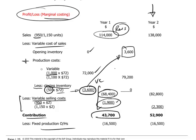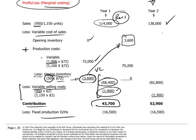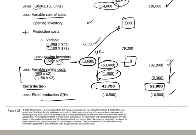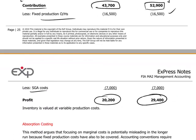In year two, we sold 1,150 units, giving us revenue of $138,000. We only produced 1,100 units, so we also sold the 50 units that were still in inventory, which means there is no closing inventory to deduct — it's zero, nothing left in inventory. The variable costs will be $82,800 plus the variable selling costs. These are our total variable costs, and our contribution in year two will be $52,900. The fixed costs were the same in both years, and therefore we arrive at a profit of $29,400. This is the marginal costing result.